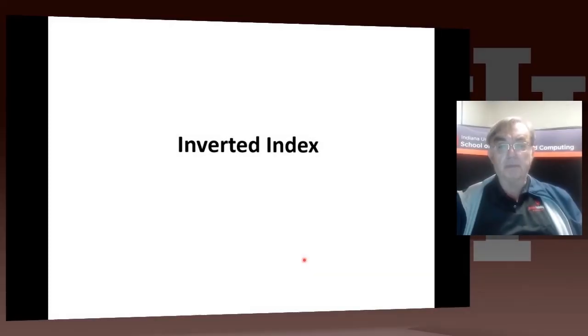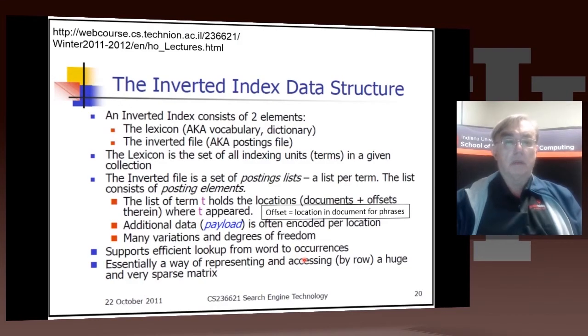Now we come, as promised, to the inverted index. So the inverted index has two aspects to it. One is the vocabulary or set of words which we're using. And the other is the inverted file which maps each word into the documents in which it is present.